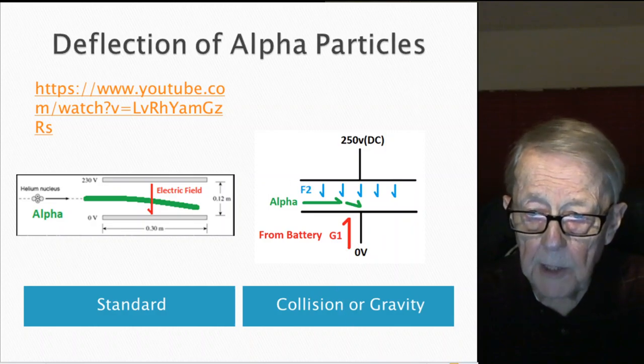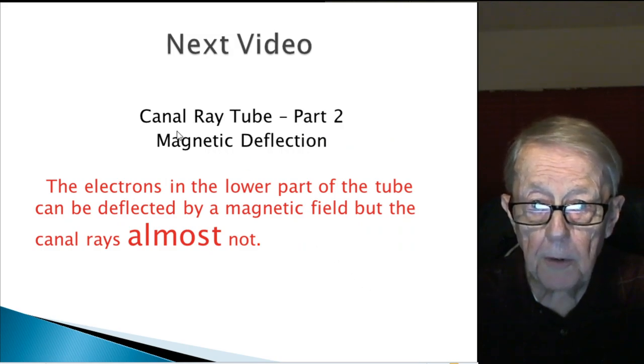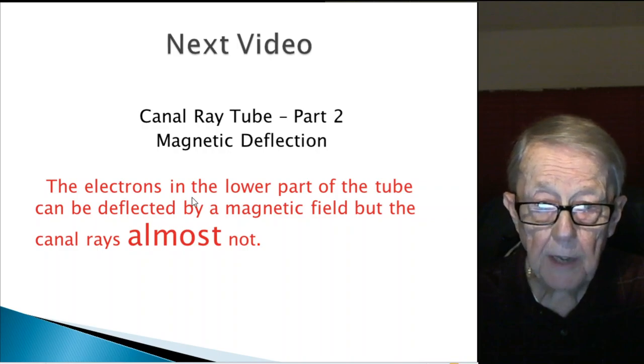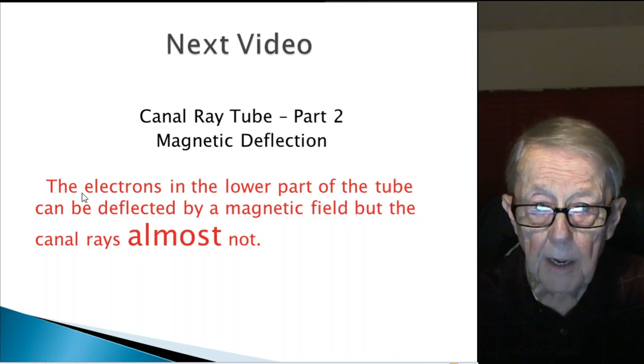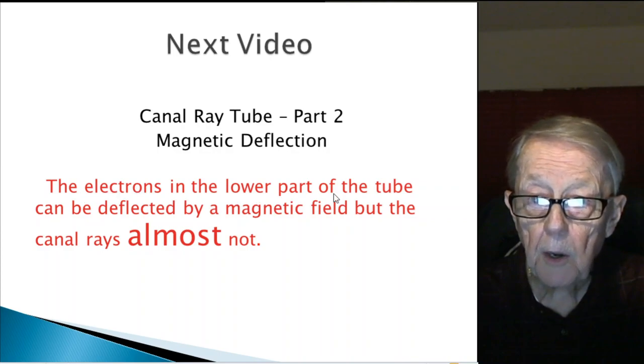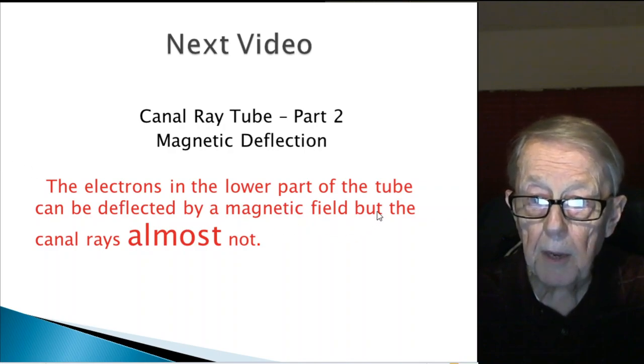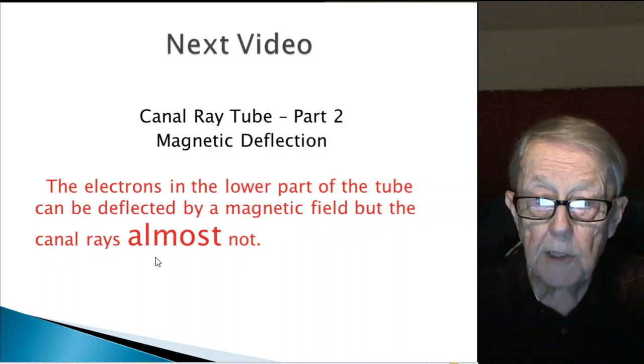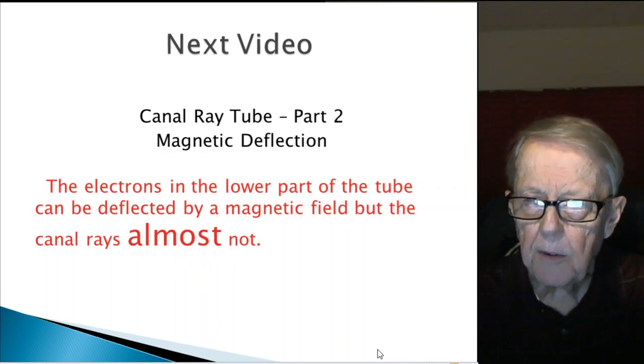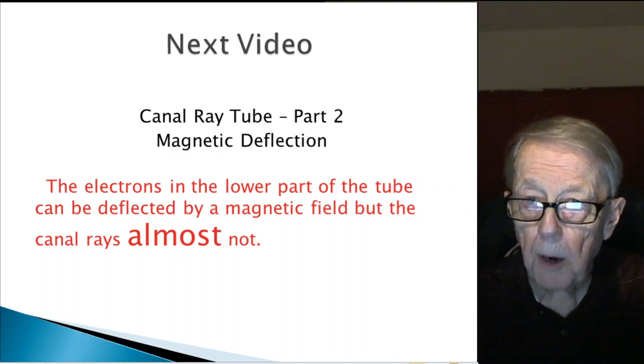Well, it's interesting that in the canal ray tube, in part two, I'm going to talk about magnetic deflection, not electrostatic. This is a repeat of my first slide. The electrons in the lower part of the tube can be deflected by a magnetic field. The electrons can, but the canal rays almost not. Interesting comment. And I intend to cover that next time in part two of the canal ray tube.